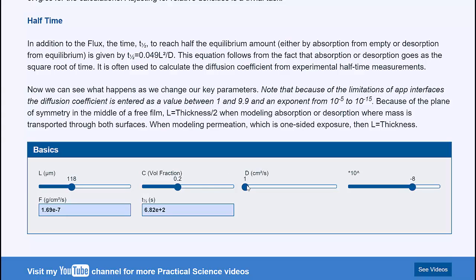If the diffusion coefficient goes up, then the flux goes up. And if it goes down, for example, by an order of magnitude, then the flux goes down. And the half time changes accordingly. That's the basics. In the next video, we'll see diffusion as a proper model over time.